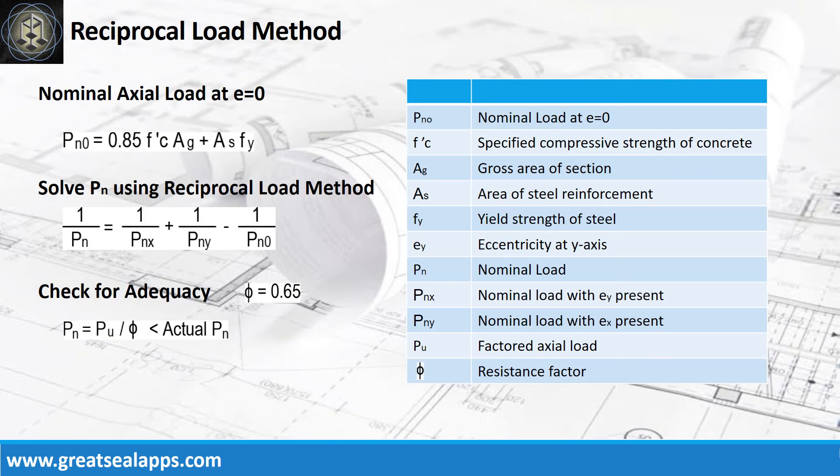Solve the nominal actual load at e equals zero. Get the actual nominal load by using the reciprocal load method. To check for adequacy, the nominal design load should be less than the actual load capacity.